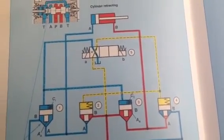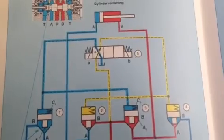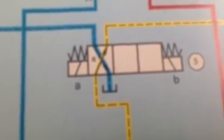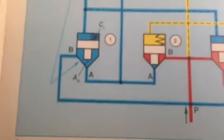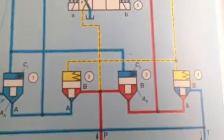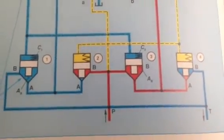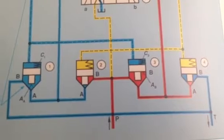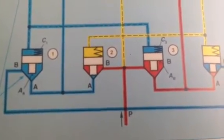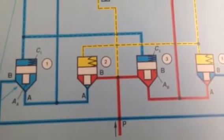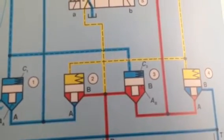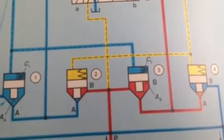If the pilot valve is now moved to position A, as you see here, logic element 2 and 4 remain closed. Fluid flows from the pump via valve 3, opened via area AB against spring C3, from B to A and to the annulus area of the cylinder.